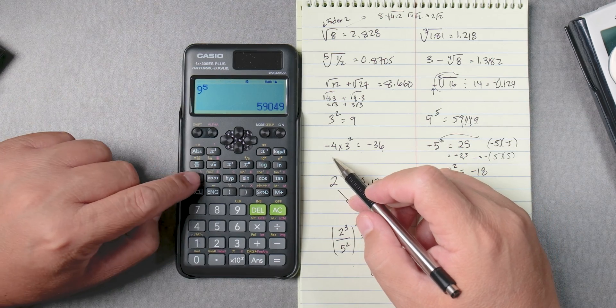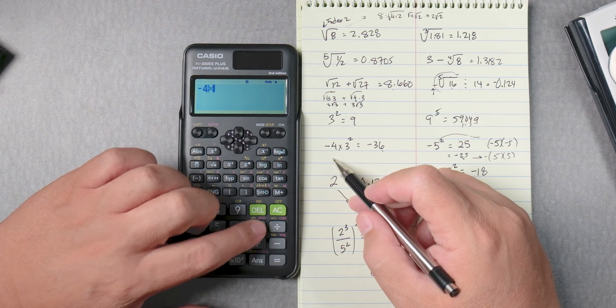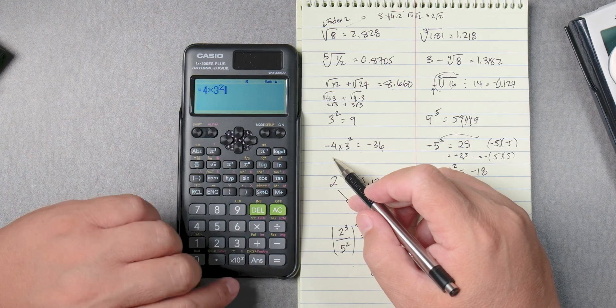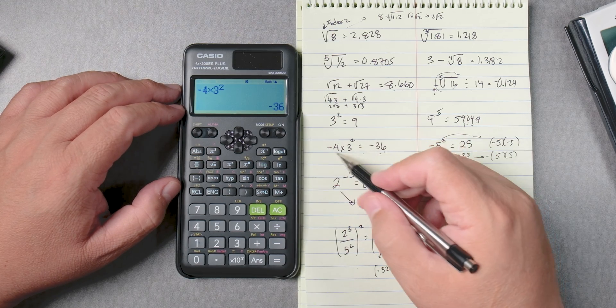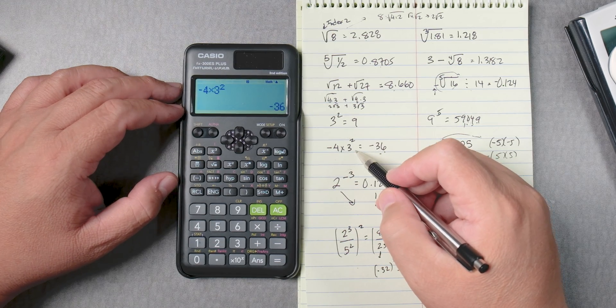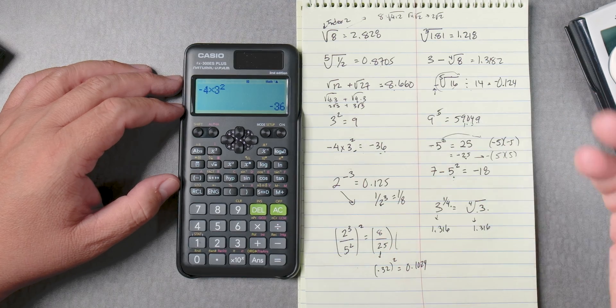Next one. We're going to put negative 4 times 3 squared equals negative 36. So it's following the rules, the order of operation.